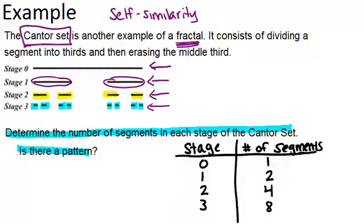If we thought about stage 4, what's going to happen? Each of these blue highlighted segments will be split into thirds, but then the middle third is erased. So two new segments are created, and they basically just look like dots on this screen. But the idea is each segment essentially gets split into two.